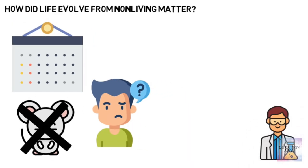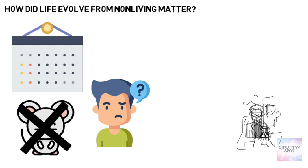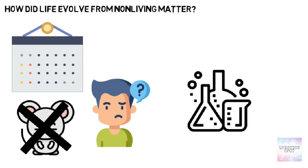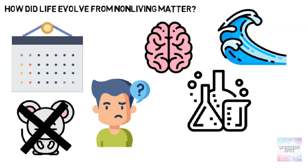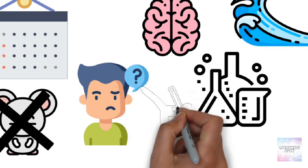Before biological evolution began, scientists believe there was chemical evolution, with simple inorganic molecules reacting to form complex organic molecules, most likely in the oceans. But what kick-started this process in the first place? Nobody clearly knows.